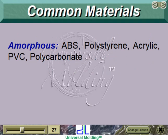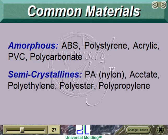Common amorphous materials include: polystyrene, acrylic, PVC, and polycarbonate. Common semicrystalline materials include: PA or nylon, acetate, polyethylene, polyester, and polypropylene.